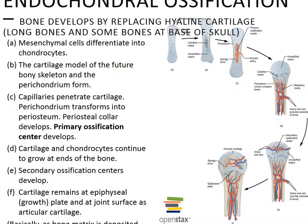Next, there is invasion of internal cavities. Blood vessels penetrate the cartilage and invade the central region. This area within the shaft of hyaline cartilage is called the primary ossification center. Migrating with the blood vessels are fibroblasts which differentiate into osteoblasts, lymph vessels, nerve fibers, and red marrow elements — collectively called the periosteal bud. The osteoblasts then secrete osteoid around remaining fragments of hyaline, forming trabeculae or spongy bone.